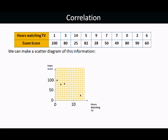9 hours watching TV, that person only got 28 in the test. 7 hours watching TV, 50% in the test. Another person also spent 7 hours watching TV and got 49 in the test. Somebody spent no time watching TV and got 80 in the test. 2 hours and 90, and 6 hours and 60%. There's a clear pattern that people who are spending more hours watching TV are getting lower exam scores because the graph is going down.